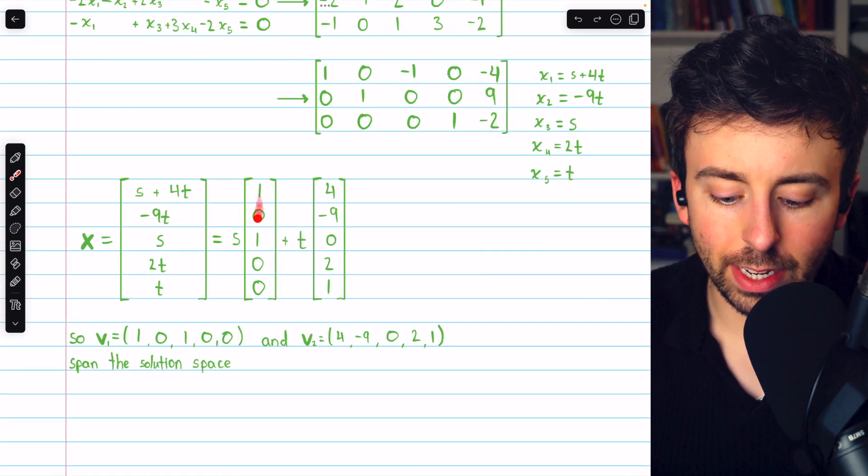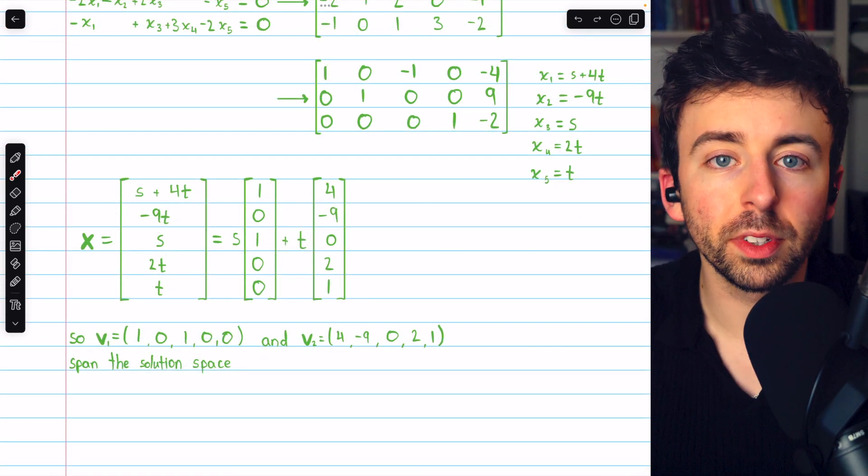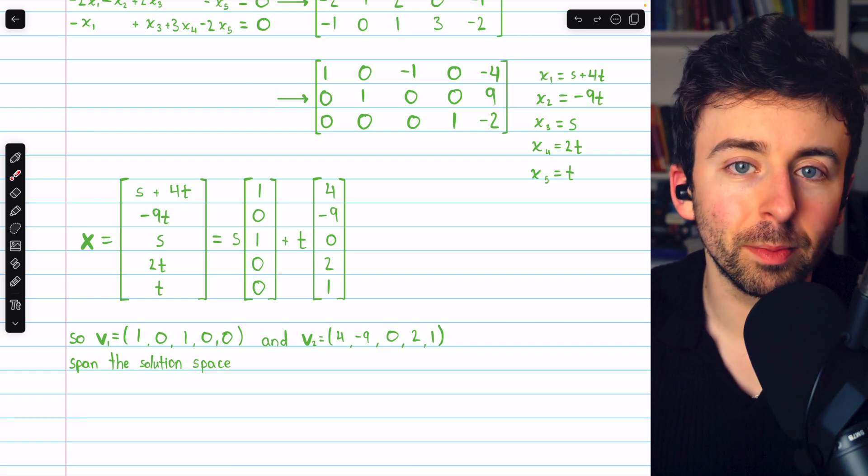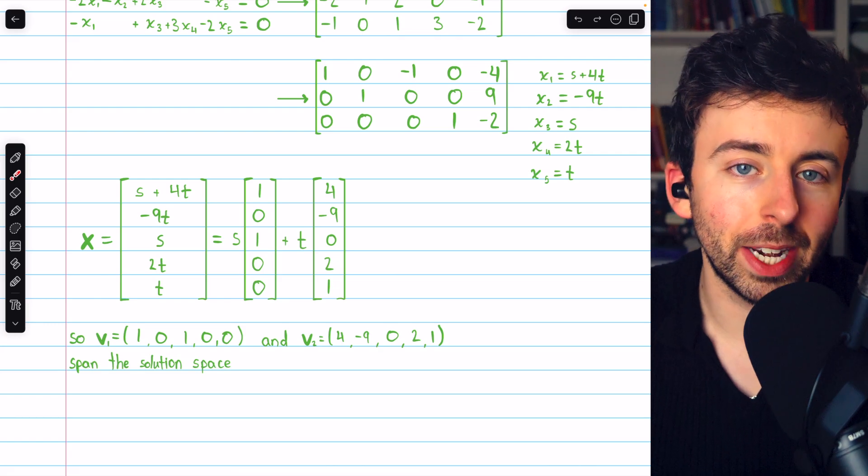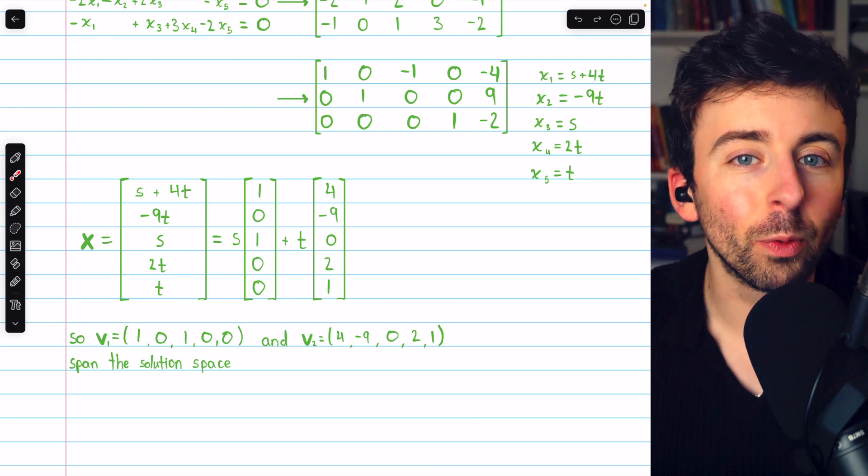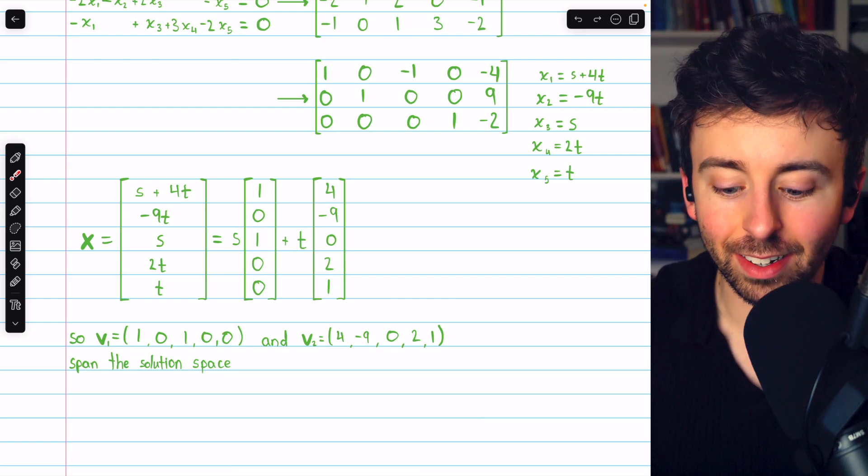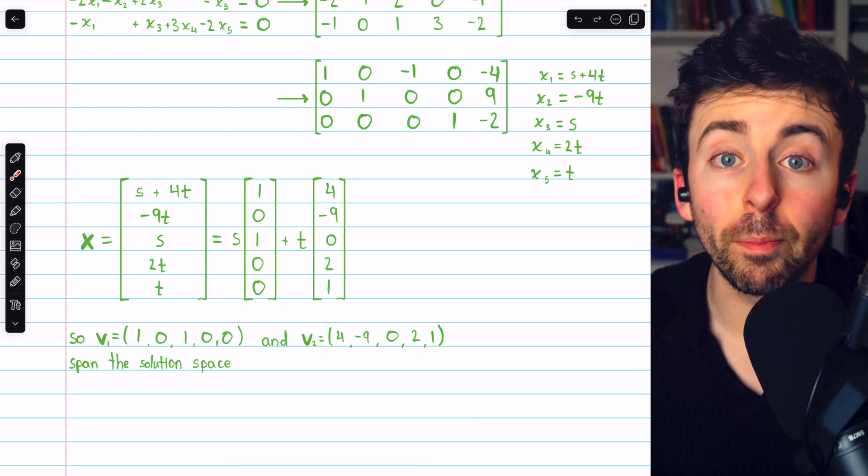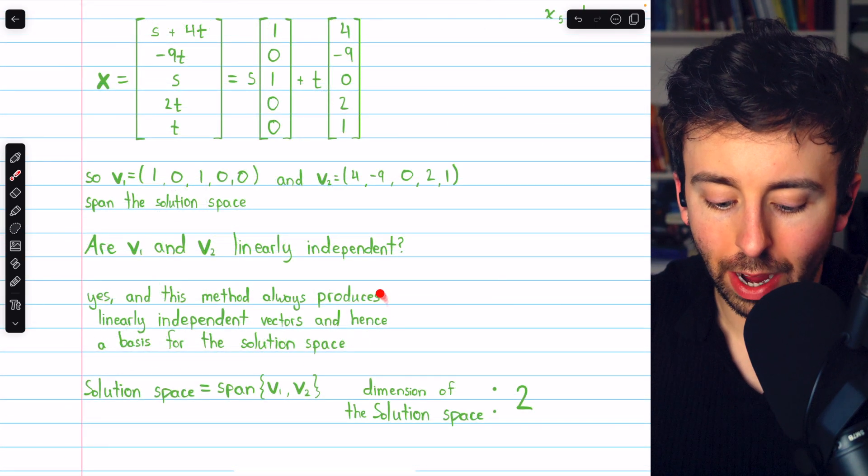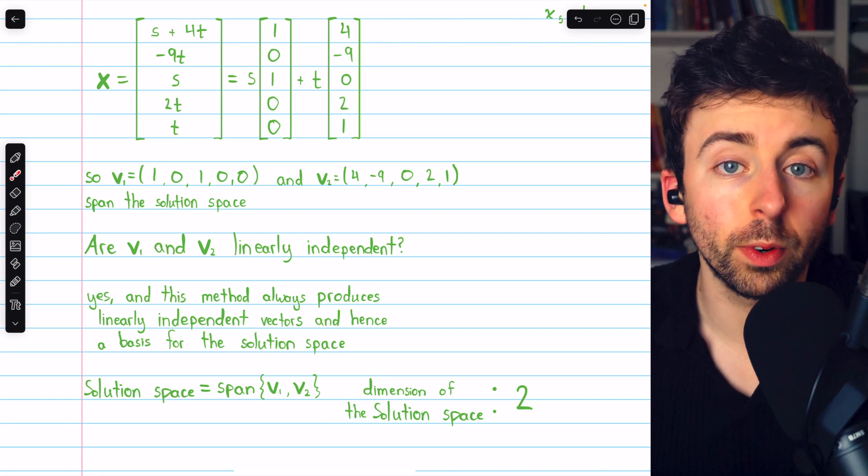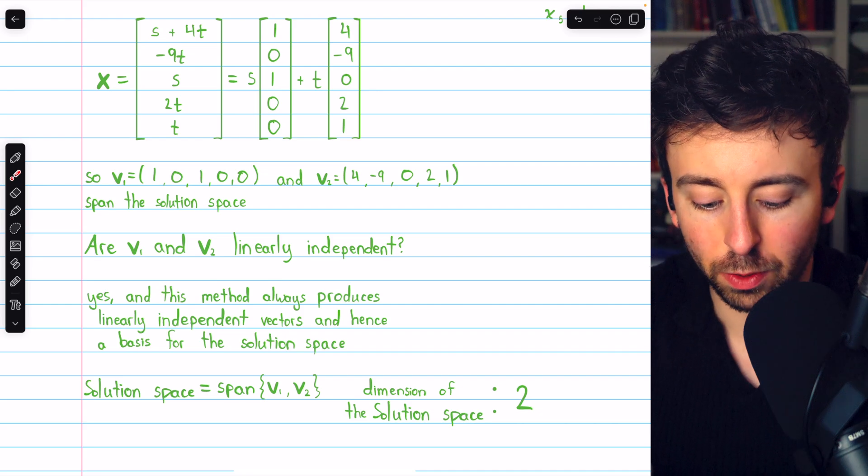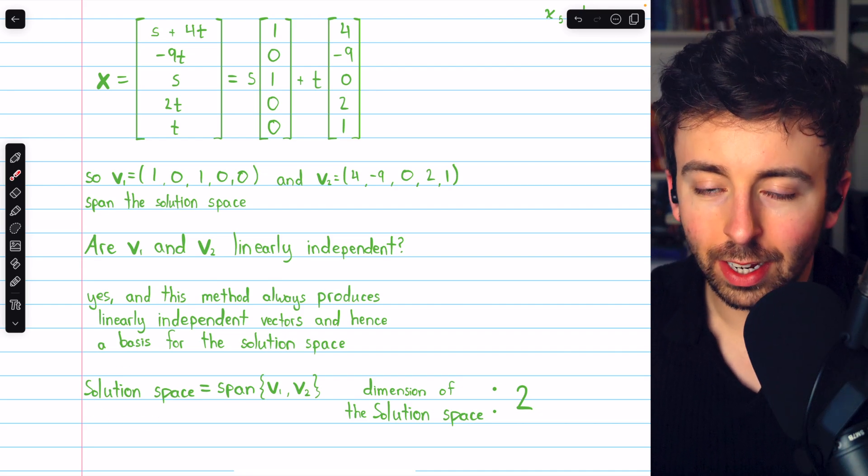Again, in this case, it's pretty easy to see these vectors are not scalar multiples of each other, and so they are linearly independent. But in general, solving a system like this with Gauss-Jordan elimination will always produce linearly independent vectors. So yeah, we're going to end up with a basis, and again, since there are two vectors in the basis, the dimension of the solution space is 2. So with Gauss-Jordan elimination, we found two vectors that produce a basis for the solution space. There are two vectors, the span of those two vectors is the solution space, and the dimension is 2.